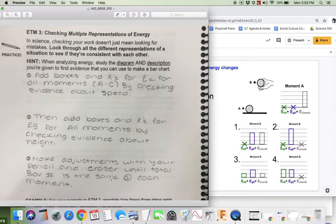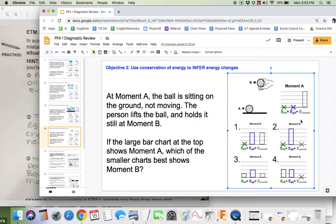So I'm going to go on to step 3, which I know is the most important for objective 2 anyway. I need to count total boxes to make sure they're the same at each moment. This looks like a total at moment A of 1, 2, 3, 4 boxes of chemical energy. This would be 1, 2, 3, 4, 5, 6. That seems like too much. Chemical energy only went down 1 and gravitational energy went up 3. That doesn't make any sense.